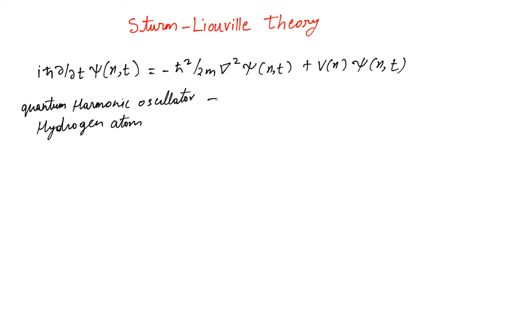Well in this case we know that V(x) is given as ½Kx², and in this case V(x) is given as -K/r.